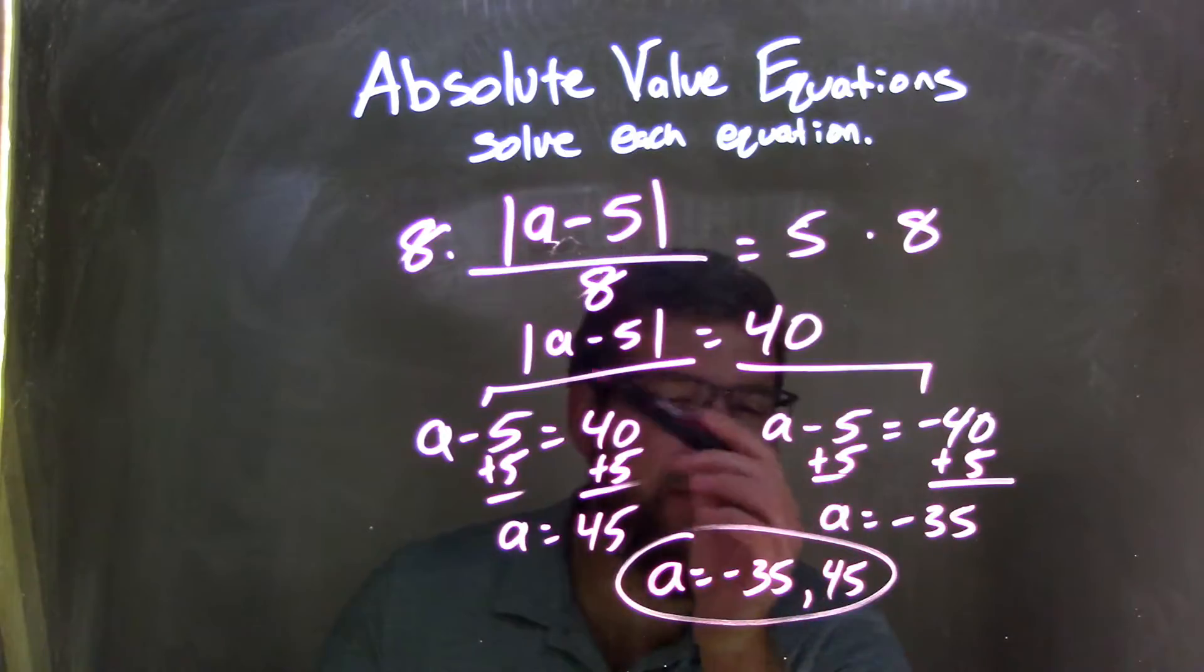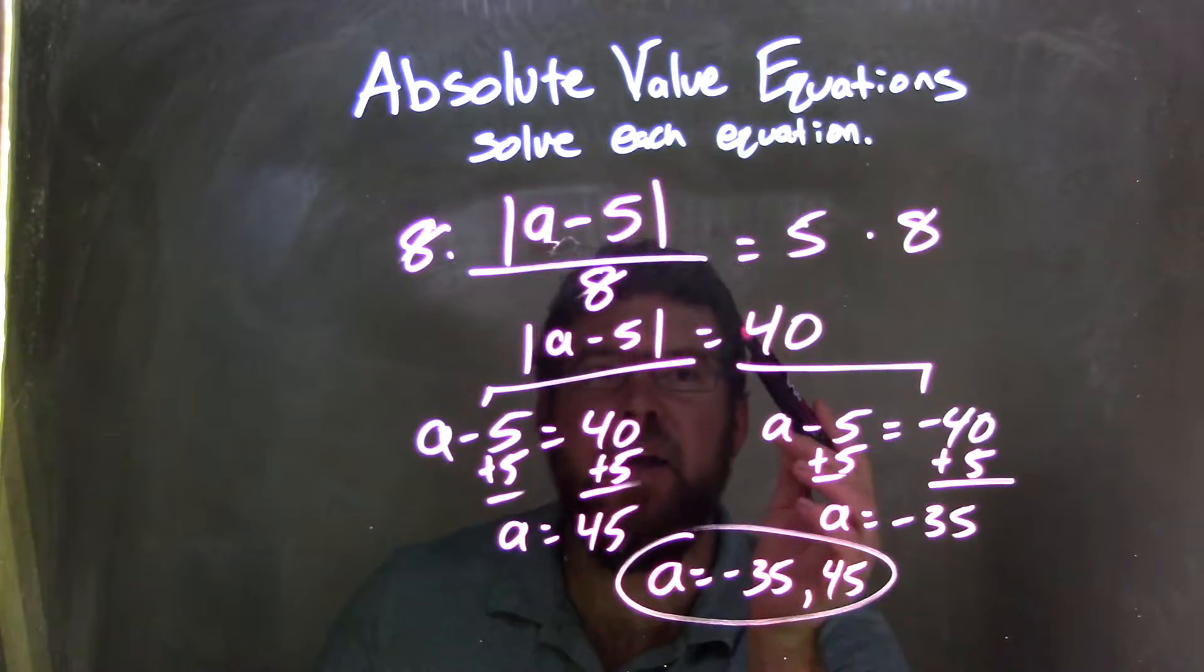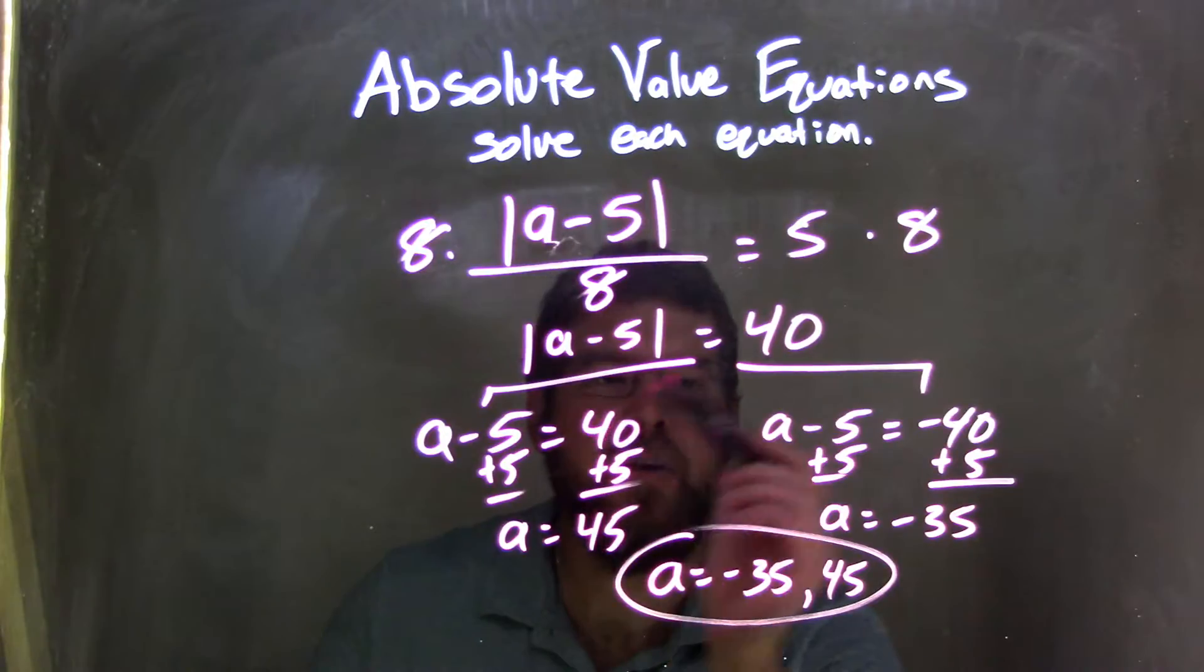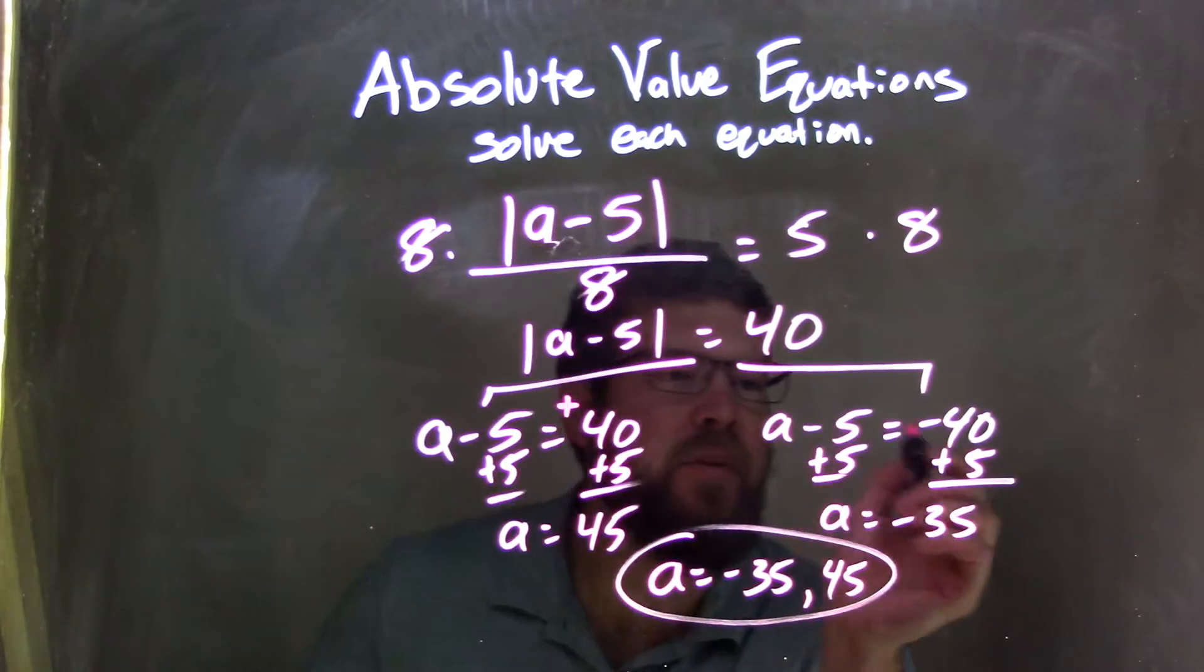From there, since the absolute value is isolated, I can break this apart into two equations: a minus 5 equals positive 40, and a minus 5 equals negative 40.